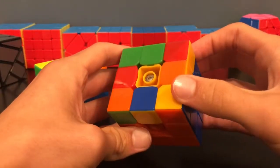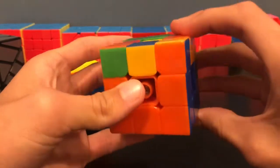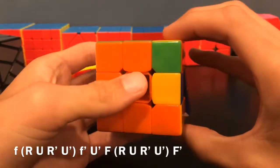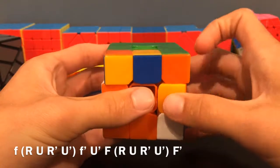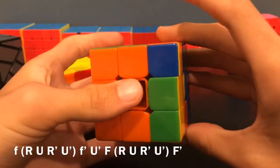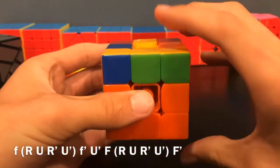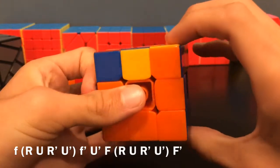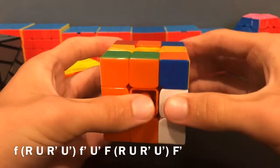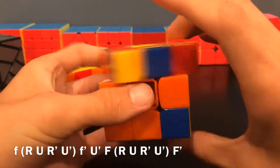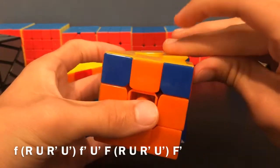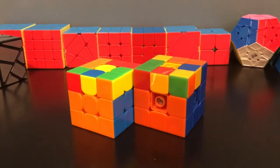For this one you'll actually hold the corner closer to you and do a similar algorithm: F-wide R U R' U' F-wide', then U' F R U R' U' F'.